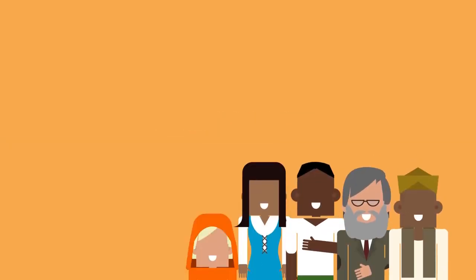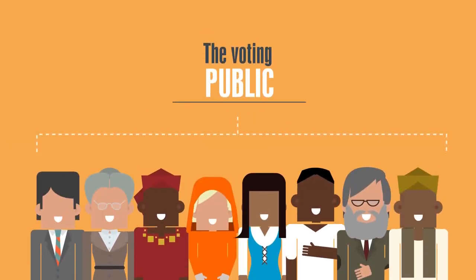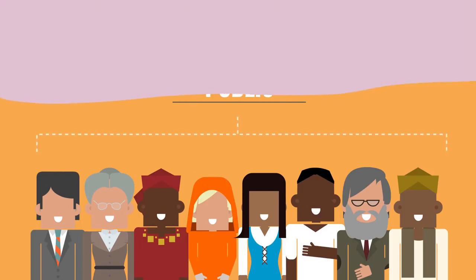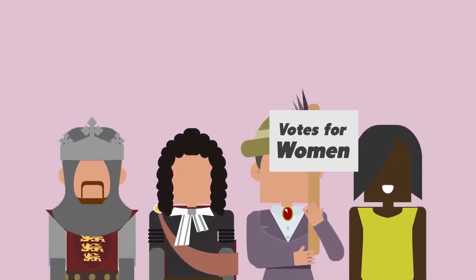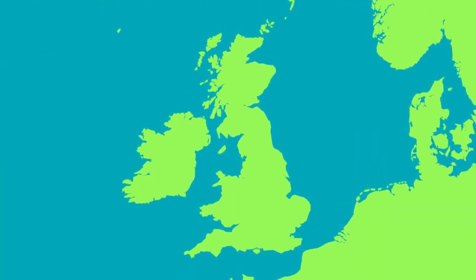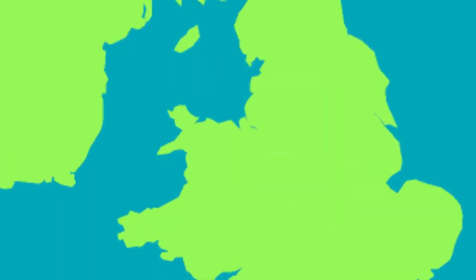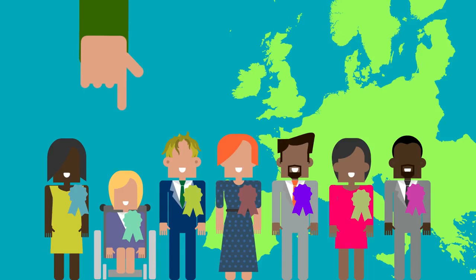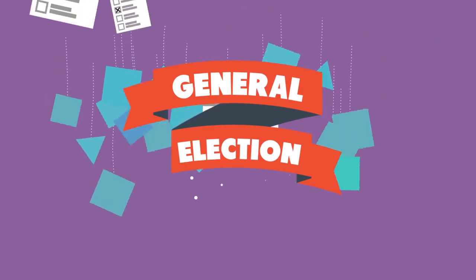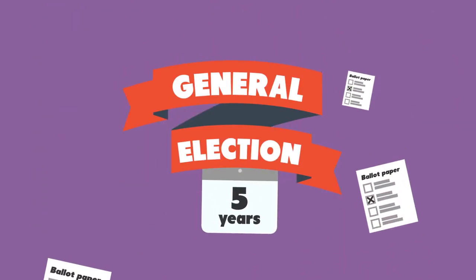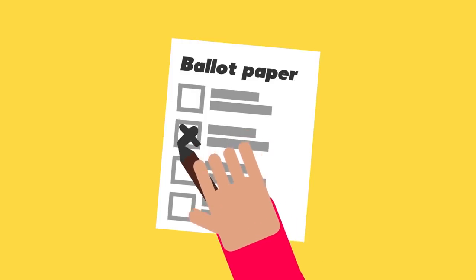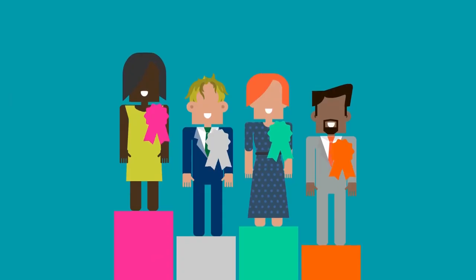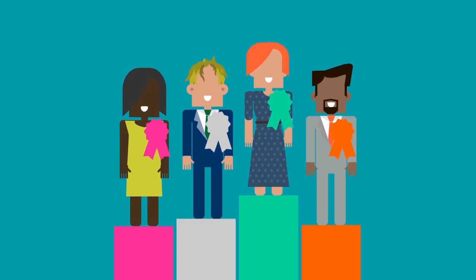In the UK, we live in a democracy, which means power is in the hands of the people through our right to vote. Throughout history, lots of people in the UK have campaigned for the voting rights we have today. General elections take place in the UK usually once every five years, and every seat is up for grabs. On polling day, voters make a choice from a list of candidates. The candidate with the most votes then becomes that constituency's MP.